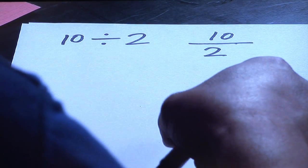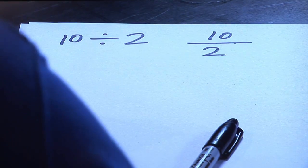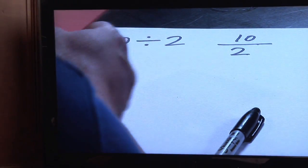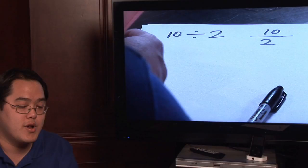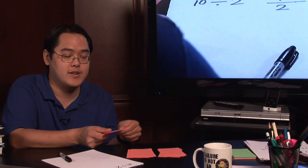Now, with ten divided by two, all you need to do is break these ten cards up into two groups and you have one, one, two, two, three, three, four, four and five, five.